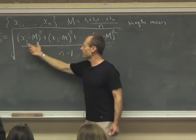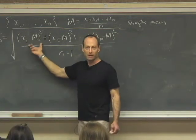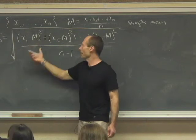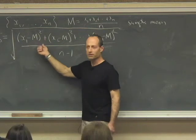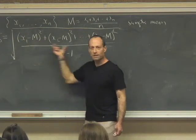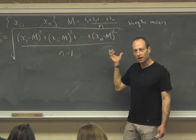So if I'm trying to figure out how scattered things are around the mean of the box to find the SD of the box, but I don't know the mean of the box, and instead I plug in the mean of the sample, the scatter around the mean of the sample is going to tend to be a little too small.